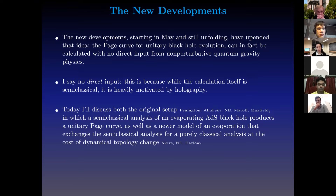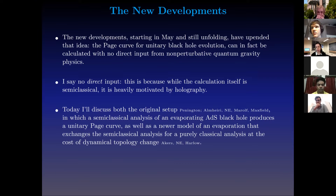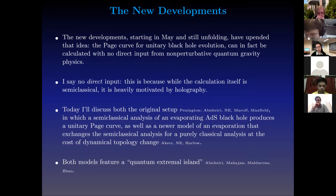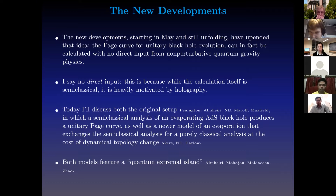Today I'm going to discuss both the original setup from May — joint work with Ahmed, Don, and Henry, and also in parallel by Jeff — where we did a semi-classical analysis of an evaporating ADS black hole that produces a unitary Page curve. Then I'll also discuss a newer model of an evaporation process that exchanges the semi-classical analysis for purely classical analysis at the cost of dynamical topology change — work with Chris Akers and Daniel Harlow. Both models feature a quantum extremal island. There was also another purely classical model by Ahmed, Raghu, Juan, and Ying, which will be rather different from the one I'll discuss in the second half, but all of these models share this feature of the quantum extremal island discussed in the last talk.